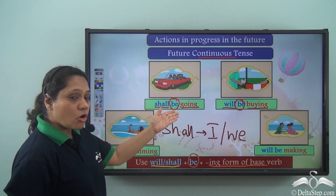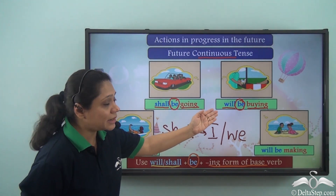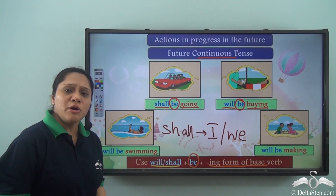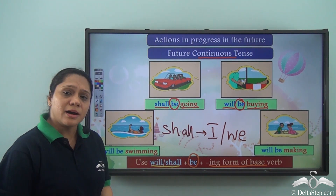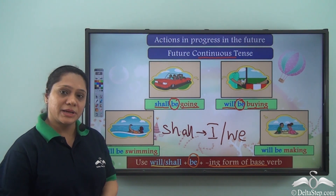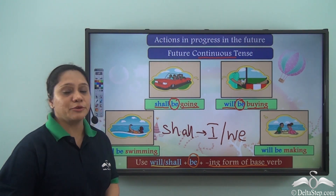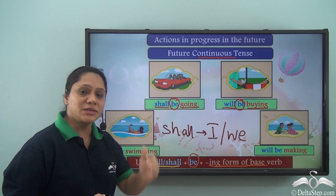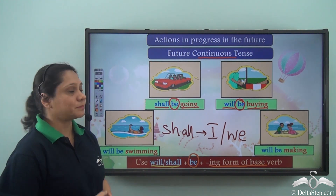You have already learned about the simple future tense. How is it different from the future continuous tense?